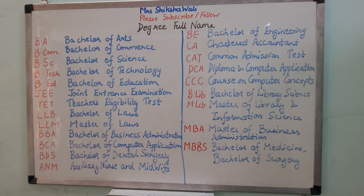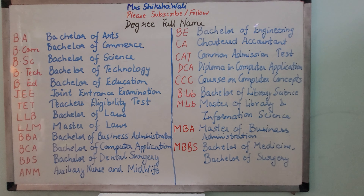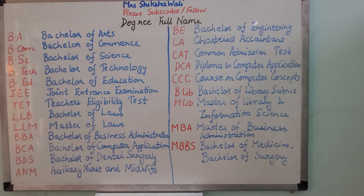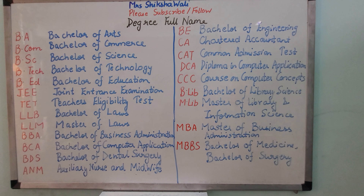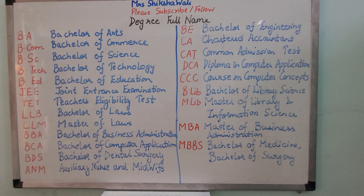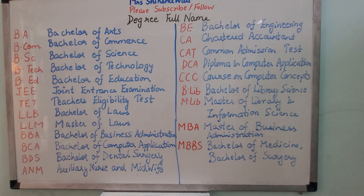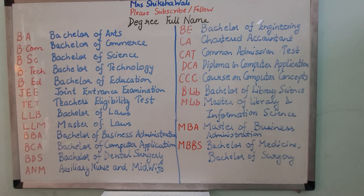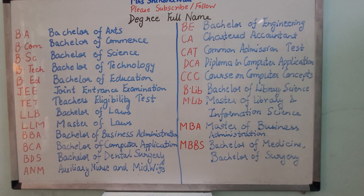BE is Bachelor of Engineering, CA is Chartered Accountant, CAT is Common Admission Test, DCA is Diploma in Computer Application.